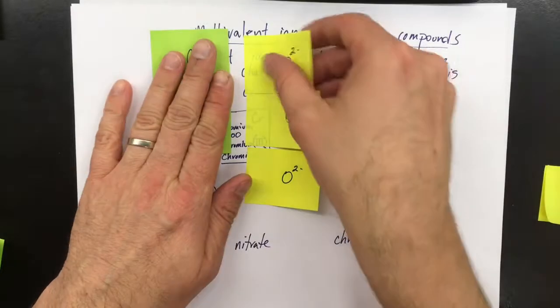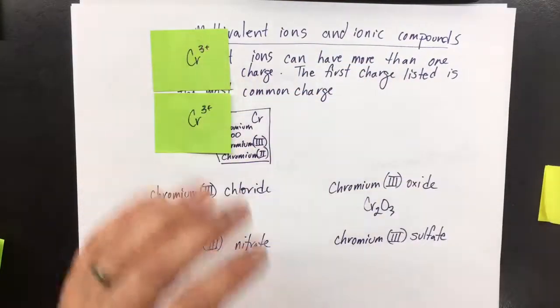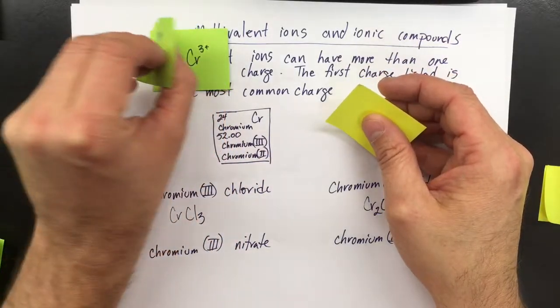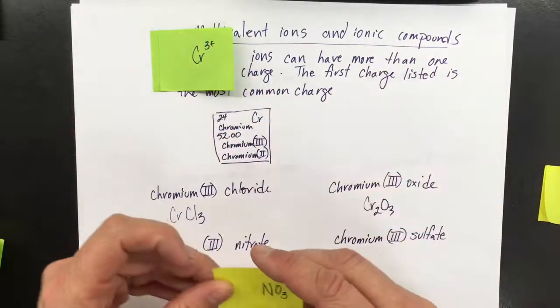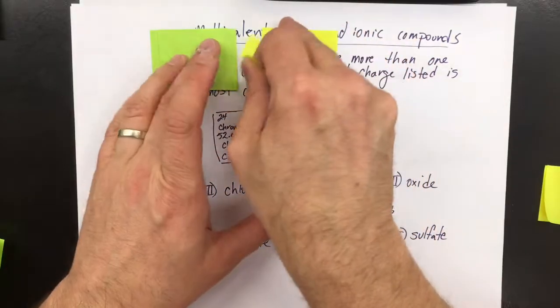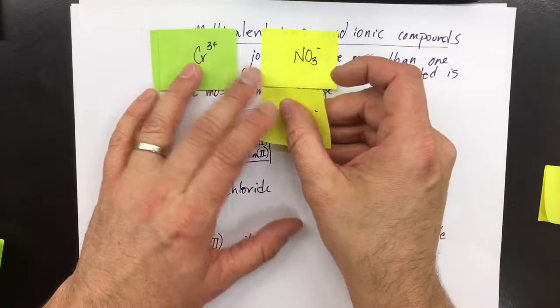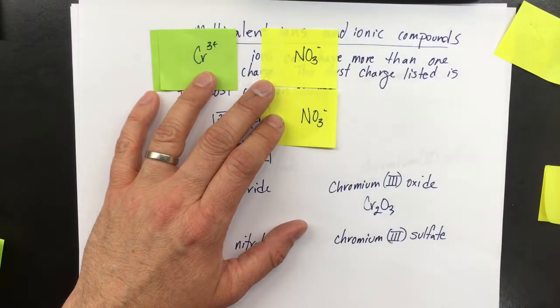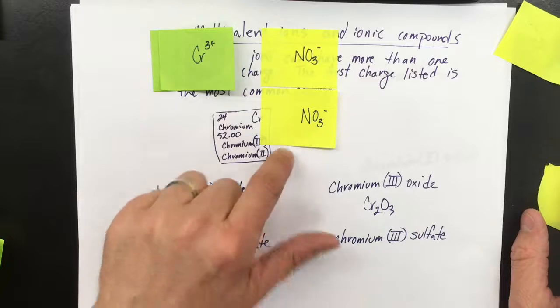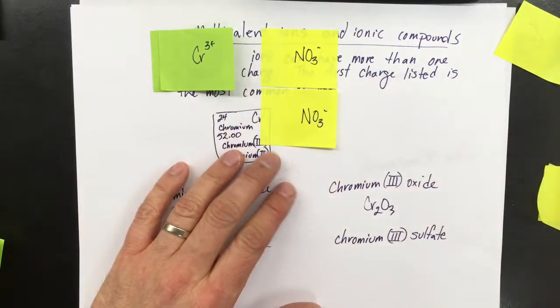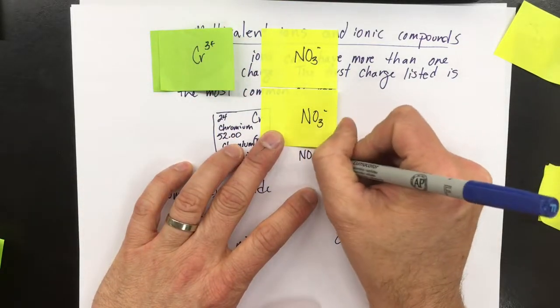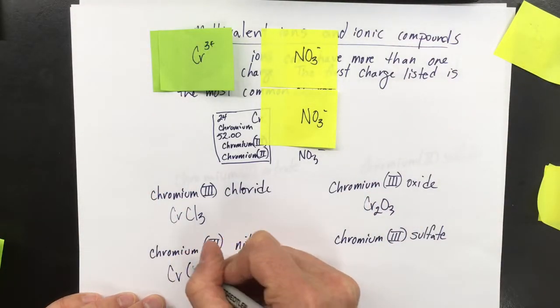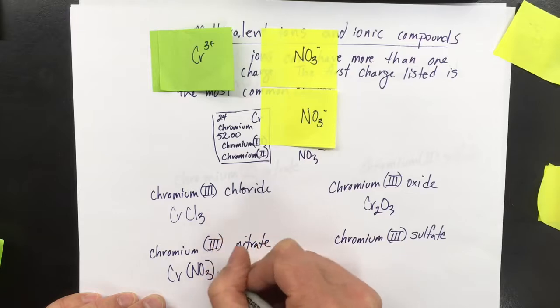Chromium(III) nitrate, on the other hand, has one chromium. We start with one chromium(III), and my nitrates are each 1-. So if I have one, two, I need another one. It needs a third one. If there was another NO3- here, that would be 3-. So chromium(III) nitrate is like that.